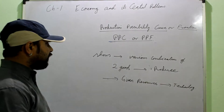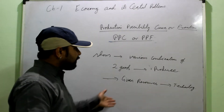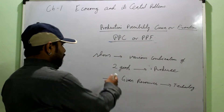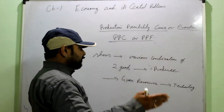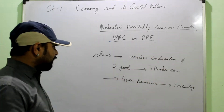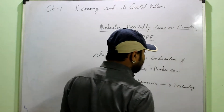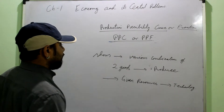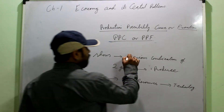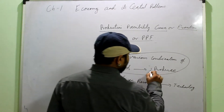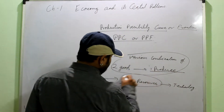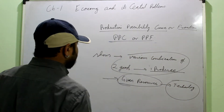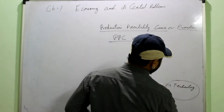Simply put, the curve itself is a representation of various variables. Here, production of good X and production of good Y are the two variables, representing how many combinations of these two goods you can produce in an economy where resources are fixed and technology remains constant. When defining the PPC, these keywords must be mentioned: combination of two goods which an economy can produce with given resources and technology.